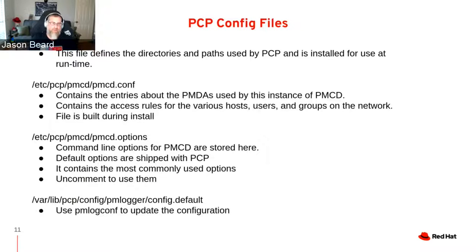There are quite a few PCP config files, but here are some of the main ones. PCP.conf has all your directories and paths set up for Performance Copilot — it reads this file on boot. The PMCD.conf is one of the major ones for the collector daemon because it contains all entries about the PMDAs — it tells you which PMDA is running and how it's connecting. There are usually three options depending on the PMDA: DSO (dynamic shared object), socket, and pipe. You can also set up access roles for hosts, users, and groups in this file. It's built on the fly during a default install and updated when you install other PMDAs.